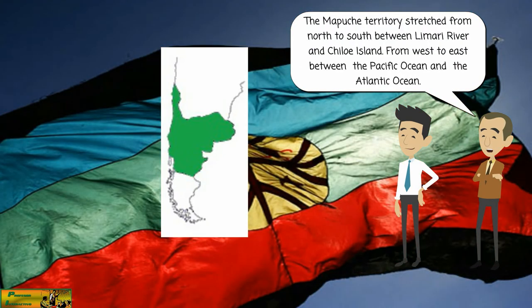The Mapuche territory stretched from north to south between Limari river and Chilo island. From west to east between the Pacific Ocean and the Atlantic Ocean.